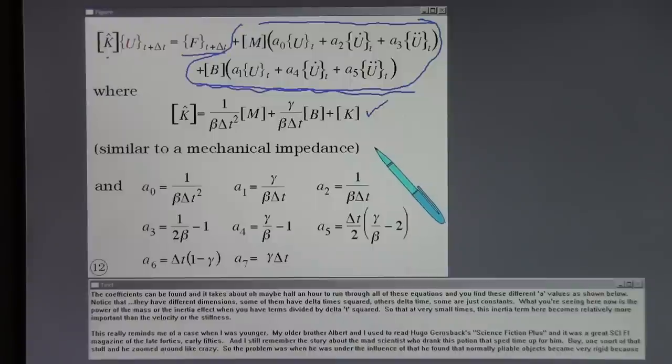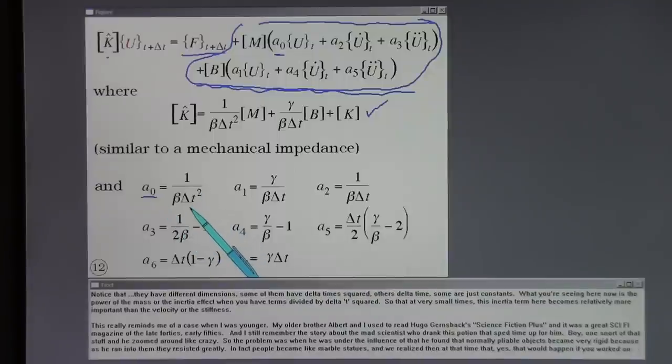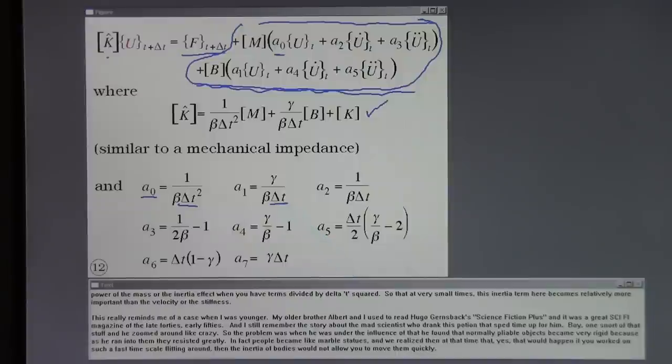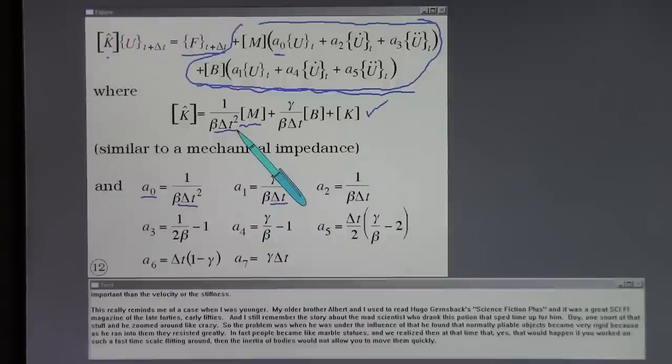The coefficients can be found and it takes about half an hour to run through all of these equations. And you find these different a values as shown below. Notice that they have different dimensions. Some of them have delta times squared, others delta times, some are just constants. What you're seeing here now is the power of the mass or the inertia effect when you have terms divided by delta t squared. So that at very small times this inertia term here becomes relatively more important than the velocity or the stiffness.